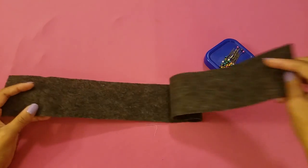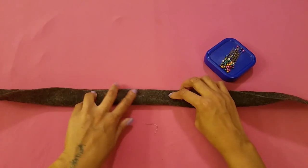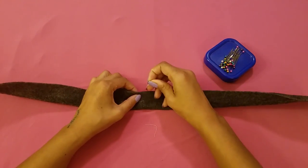Now you are going to take your strip and fold it in half, wrong sides together, and then pin across the whole edge.